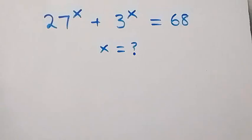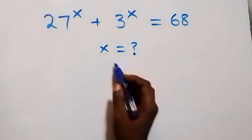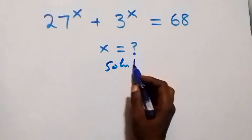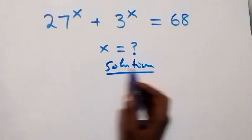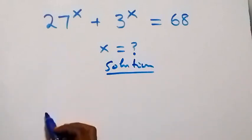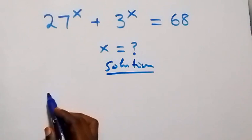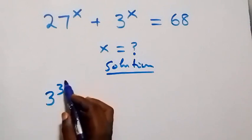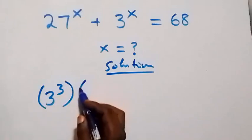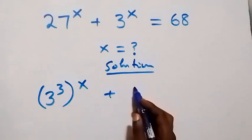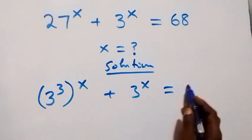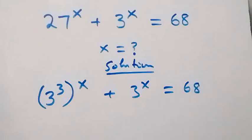Hello, you're welcome. How to solve for x in this exponential equation. For the solution, we can rewrite 27 as 3 raised to power 3, so we have 3 raised to power 3, then raised to power x, plus 3 raised to power 3, equals 68.